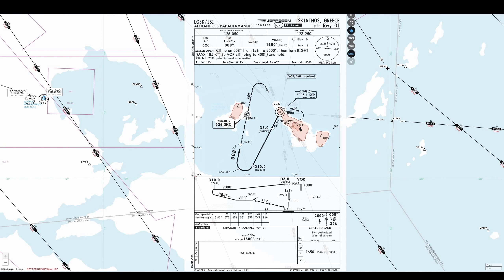A few things to mention — we also have the missed approach procedure. If there is a missed approach, you climb on 008 from the locator to 2500 feet, then turn right. Max speed is 185 knots back to the VOR, climbing to 4000 feet and hold. So if we have to go around, we go outbound on 008, climb to 2500, max 185 knots, turn back to the SKP VOR and hold at 4000 feet.